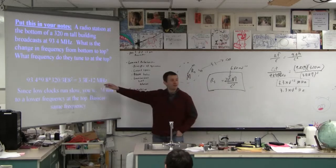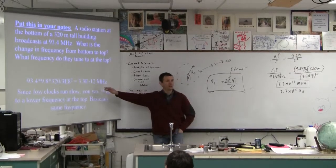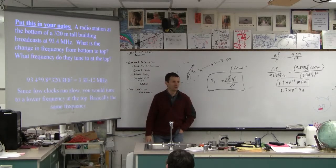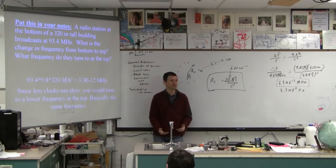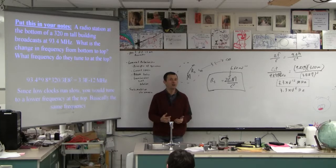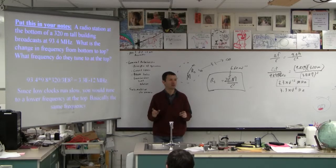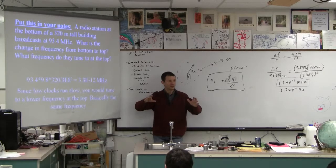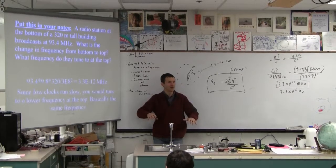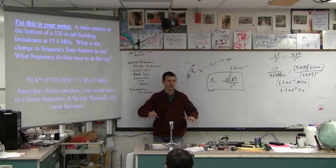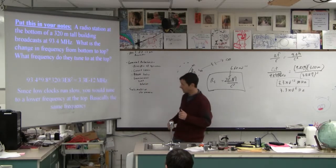Now, theoretically, the question says that the radio station for some reason, unknown to us, is at the bottom of this tower, we're at the top. So all we've found is the amount that it's going to be less, isn't it? Because low clocks run slow, correct? Yeah. Okay. So actually we tuned to a lower frequency, only not really very much lower, correct? Yeah. Not really very much lower. So maybe lower, but not very much.